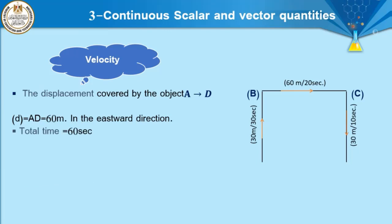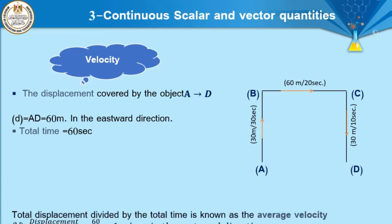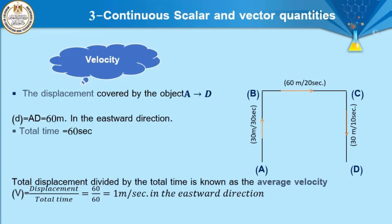Total time covered by this object equals 30 seconds plus 20 seconds plus 10 seconds equals 60 seconds. To determine the velocity, the average velocity equals displacement over time: 60 over 60 equals 1 meter per second. The direction of velocity is the same as the direction of displacement — eastward. So the velocity equals 1 meter per second in the east direction.